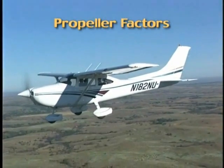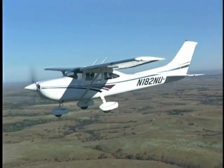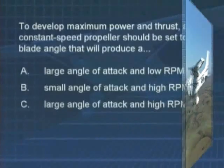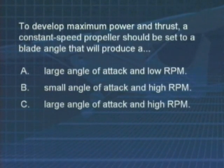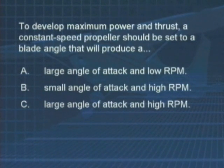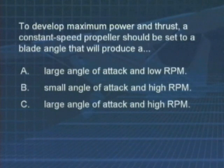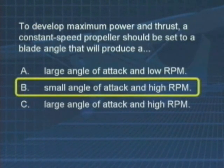With a constant speed propeller, the prop can be set to low pitch for takeoff and high pitch for cruise. Let's try an FAA test question: To develop maximum power and thrust, a constant speed propeller should be set to a blade angle that will produce — A) a large angle of attack and low RPM, B) small angle of attack and high RPM, or C) large angle of attack and high RPM? From what we just discussed, the answer is B.